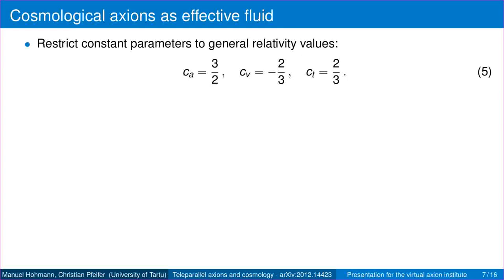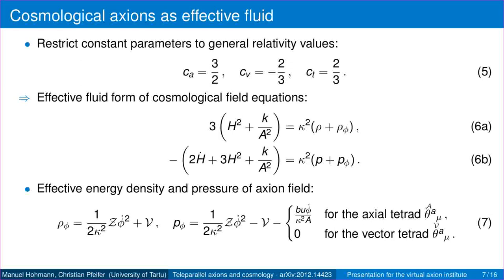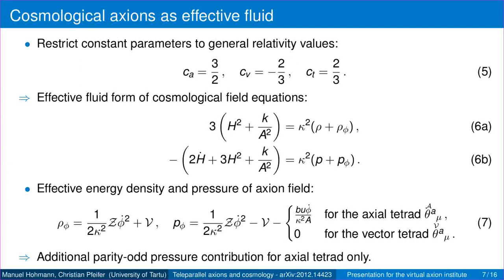To study this further, we consider the axions as an effective fluid, taking the simple case of coupling the axions to the teleparallel equivalent of general relativity with the standard coupling constants. The cosmological dynamics is given by the Friedmann equations, with the axion contribution moved to the right-hand side as an effective density and pressure. The density corresponds to that of a minimally coupled field, while for the pressure we find, in the case of the axial tetrad, an additional contribution. This contribution is linear in U, which governs the parity of the tetrad — hence this is a parity-odd pressure contribution.